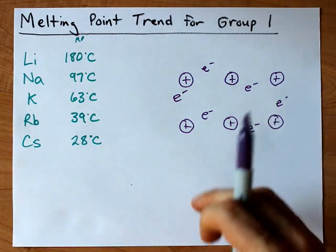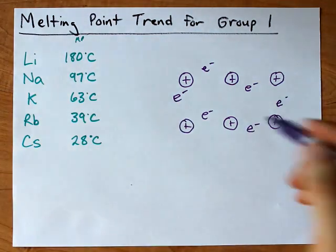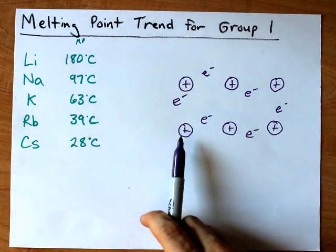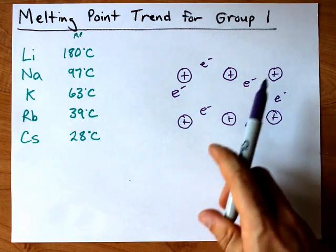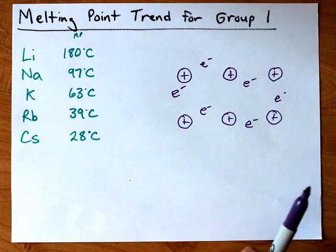Thus, what makes a metal melt is to add enough energy to overcome the attractive forces between the nuclei, or rather the cations that make up the lattice and the electron glue that's holding them together.